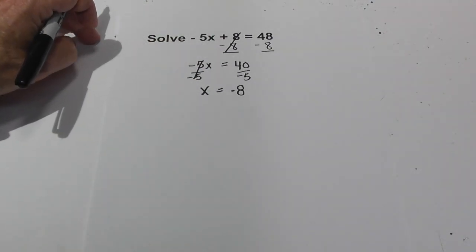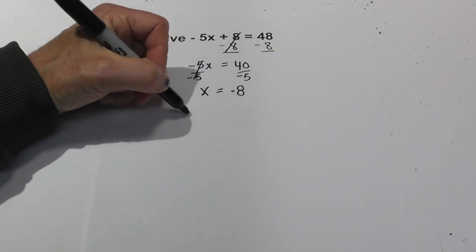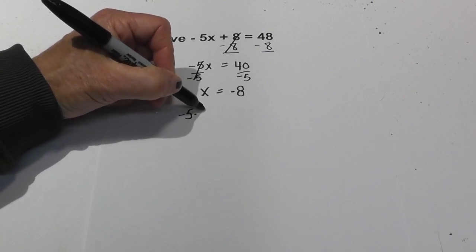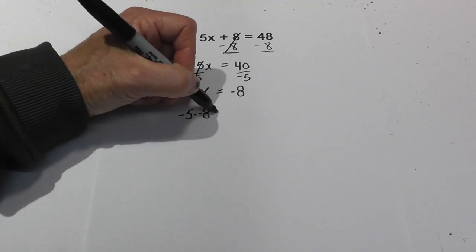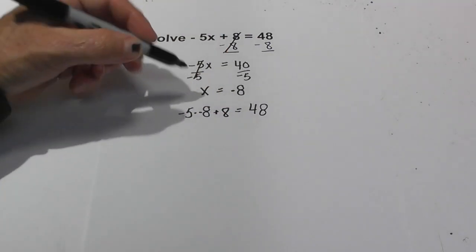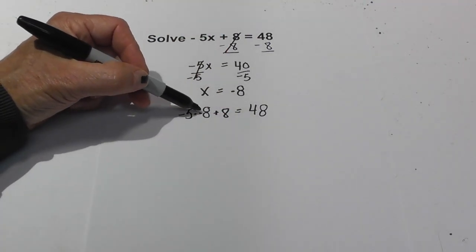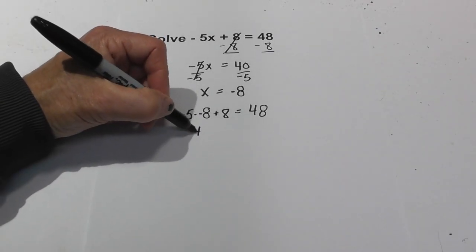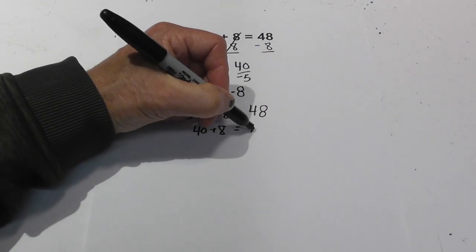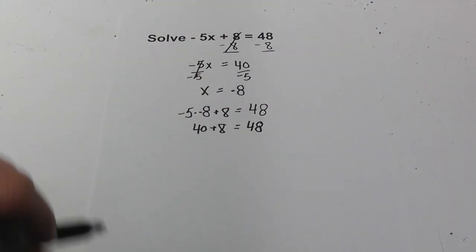So x is equal to negative 8. Now let's plug it in. We have negative 5 times negative 8 plus 8 is equal to 48. Negative 5 times negative 8 is 40, plus 8 is equal to 48. So it checks out.